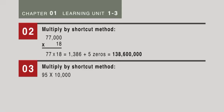In question number 3, multiply by the shortcut method. 95 times how many zeros do we have? Add 4 zeros, so we take the 95 and add 4 zeros, becomes 950,000.